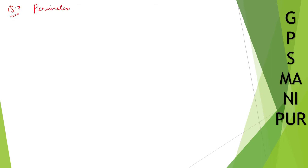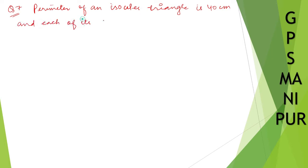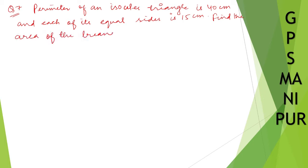Now we are doing question number seven, exercise 12.1. Let me write down the question: perimeter of an isosceles triangle is 40 centimeters, and each of its equal sides is 15 centimeters. Find the area of the triangle using Heron's formula.